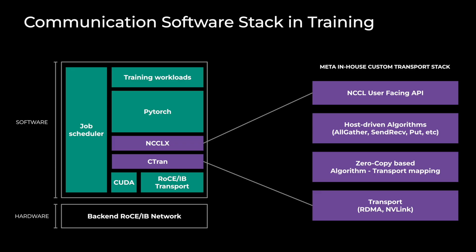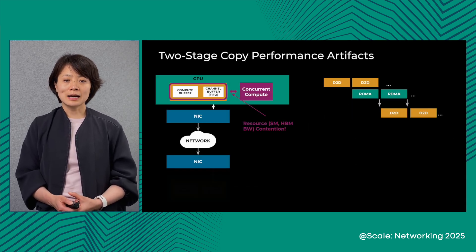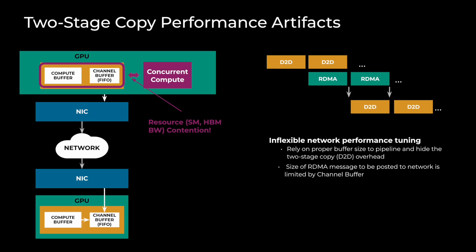Now let's look at the software stack of our pre-training. We made a downstream fork from the NVIDIA NCCL library to host all of our custom features made by Meta engineers. We developed a custom transport module called Sichuan within our downstream fork NCCL-X library. Sichuan provides the full path from custom collective algorithms all the way to the lower transport layer for network RDMA and internal NVLink. NVIDIA NCCL designs the collective algorithm based on a two-stage copy scheme, which requires data copy from compute buffer to NCCL internal buffer, costing GPU resources including SMs and HBM bandwidth. This results in poor performance for concurrent computation and communication, and also limits network performance tuning due to involved data chunking.